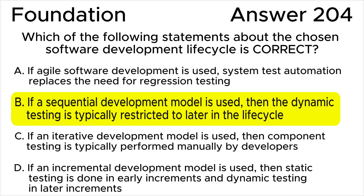All the other answers are wrong. Answer A is not correct: in agile software development, deliverables are produced in each iteration and the frequent delivery of increments necessitates extensive regression testing. Although some or all of this regression testing may be automated, regression testing — automated or not — cannot be replaced by system test automation.